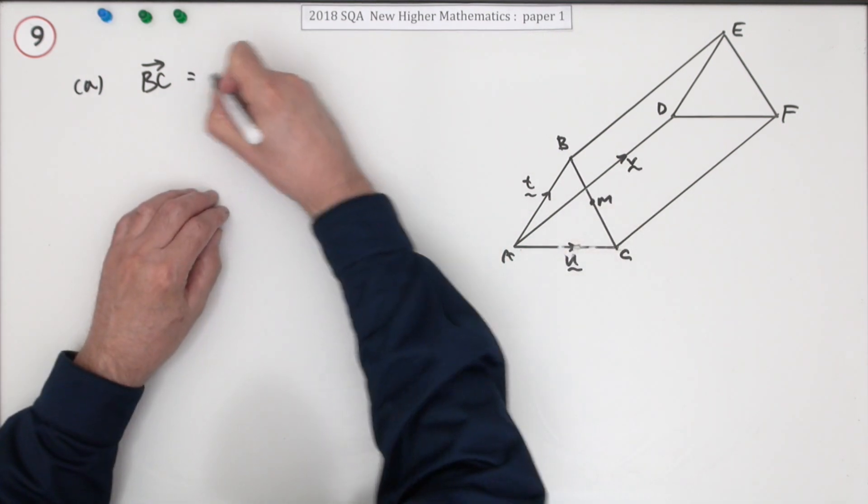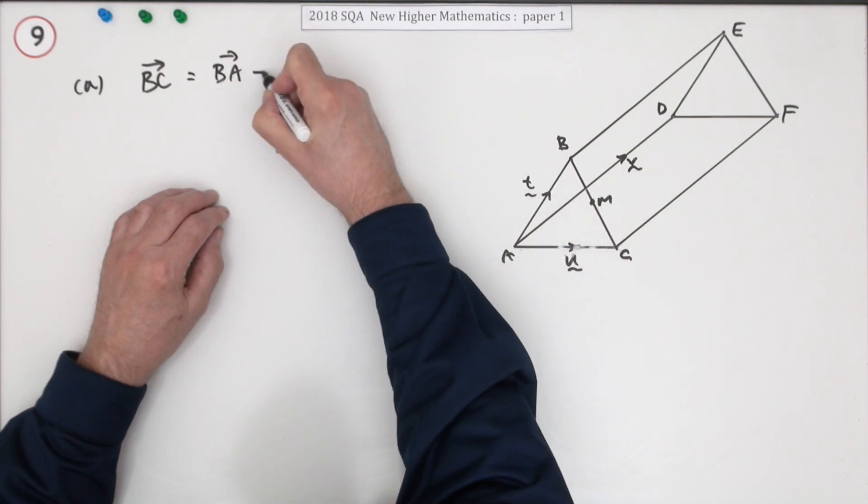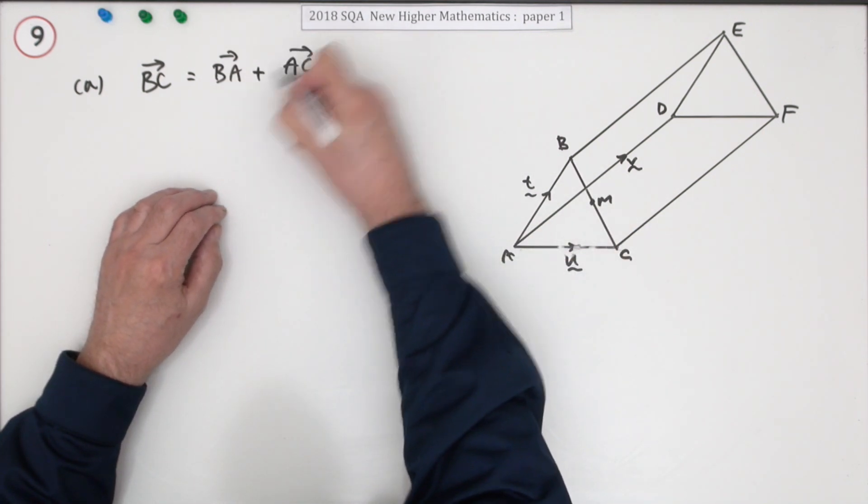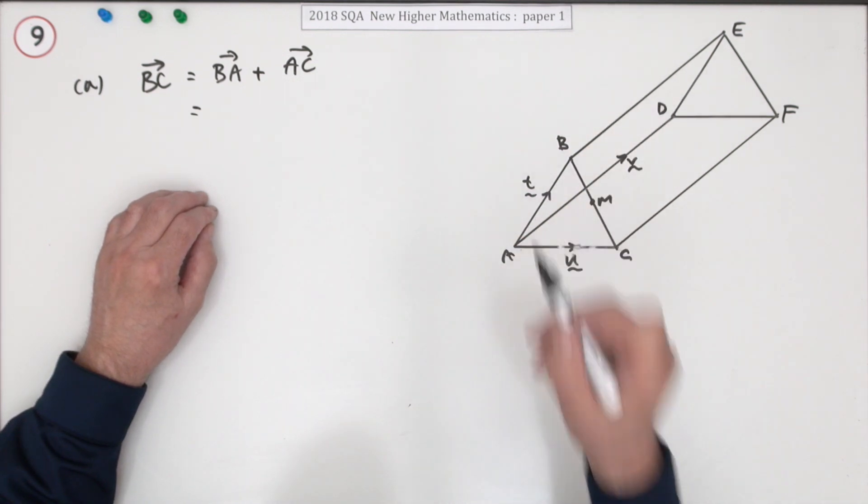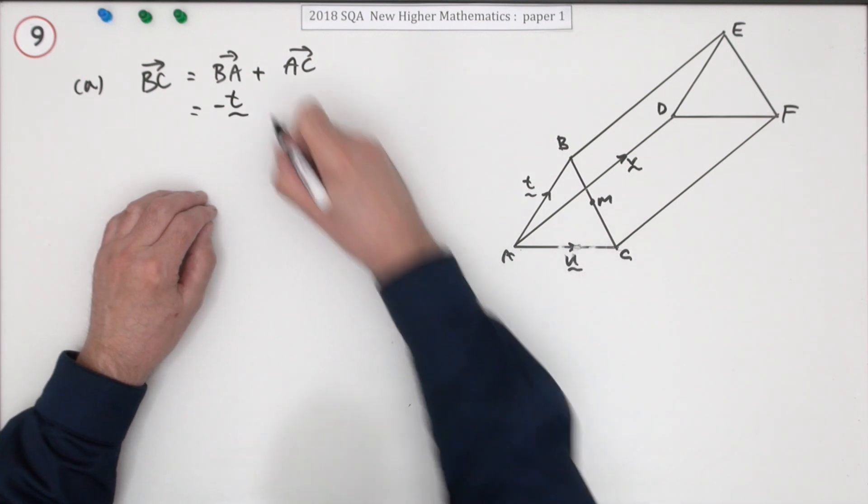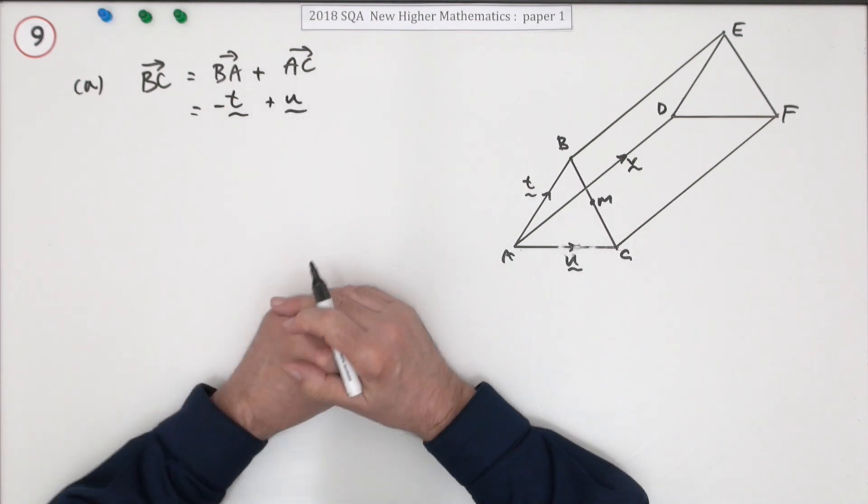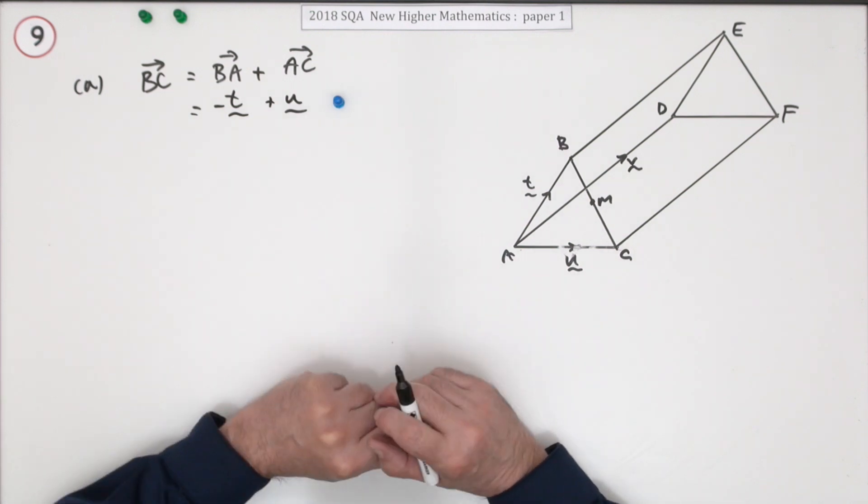The simplest one is to go from, I'll just show the working, if you go from B to A, and then you go from A to C. So going from B to A, you're travelling against the flow of T. That's a negative T. And then from A to C, you're going with U, so it's negative T plus U for the first mark. Or you could rearrange that to say U minus T.